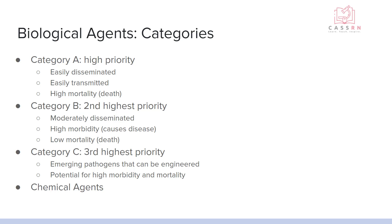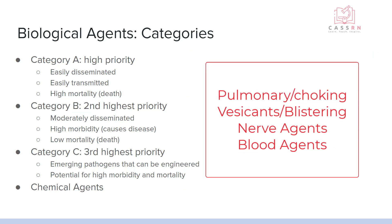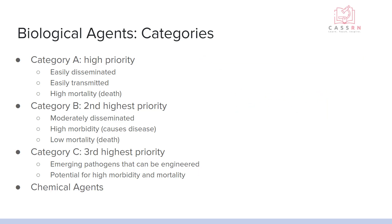Category C is the third highest priority — emerging pathogens that can be engineered and have a potential for high morbidity and mortality. These include easily accessible diseases such as influenza, TB, rabies, and Hanta virus that could be engineered to cause high mortality and morbidity. Chemical agents include pulmonary and choking agents, vesicants and blistering agents, nerve agents, and blood agents. Choking agents were used in World War I and nerve agents were used in terror attacks in Japan. Chemical agents can be intentional or unintentional, such as the 2011 Fukushima earthquake causing a tsunami that led to a nuclear plant leak. If a chemical agent is suspected, a hazmat team will need to be called in.